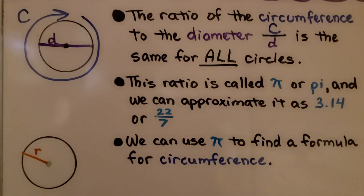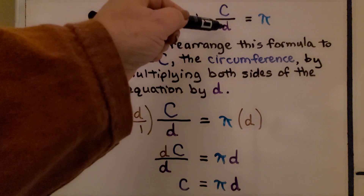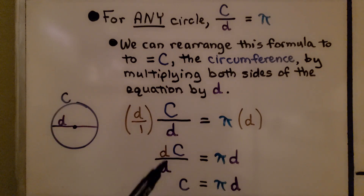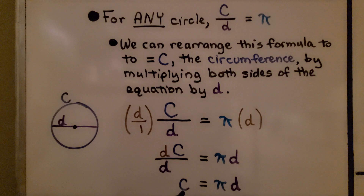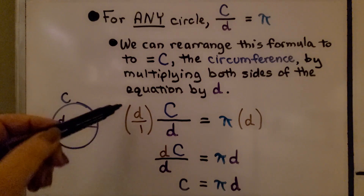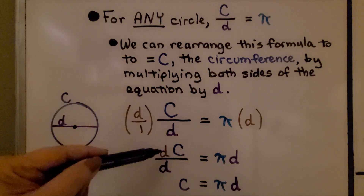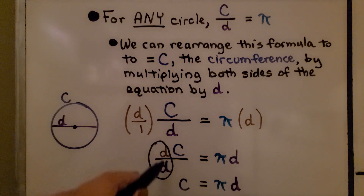We can use pi to find a formula for circumference. For any circle, the circumference divided by the diameter is equal to pi. We can rearrange this formula to equal c, the circumference, by multiplying both sides of the equation by d, the diameter. We multiply this side by d and write d over 1, since that's written like a fraction. We get d times c over 1d, and we have the same numerator and denominator, so that is a 1. So we have 1c is equal to pi times d, the diameter.